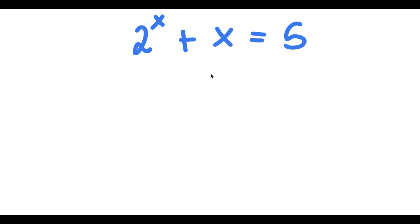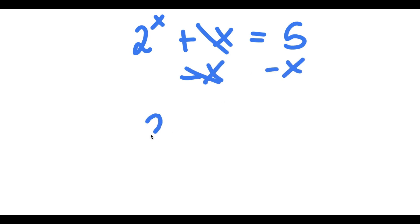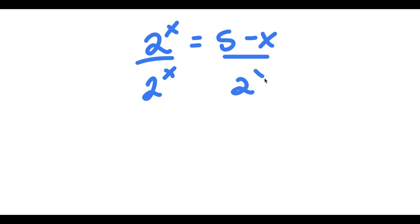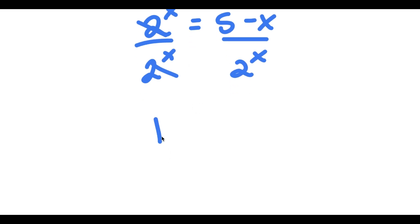So in this problem, I have 2 to the power of x plus x equals 5. I'm going to first start by subtracting x on both sides. These two cancel out, and I get 2 to the power of x is equal to 5 minus x. Now I'm going to divide both sides by 2 to the power of x. These two cancel out, and I get 1 is equal to 5 minus x over 2 to the power of x.